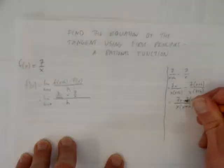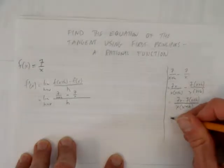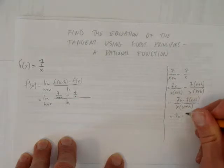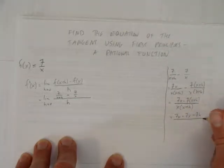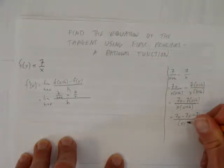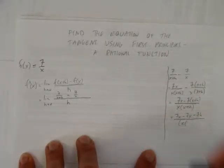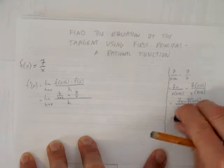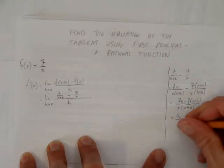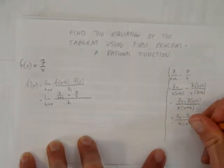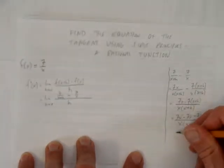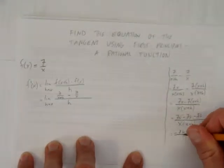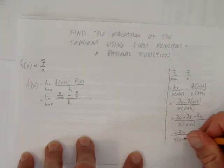Well, I can expand this minus 7 into the brackets and get 7x minus 7x minus 7h all over x times x plus h. And of course, the 7x's cancel out, and I get negative 7h over x times x plus h.